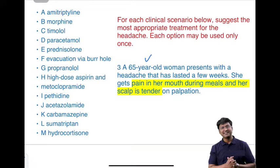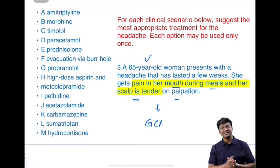The eighth scenario: a 65-year-old woman presents with headache lasting a few weeks, pain in her mouth during meals, and scalp tenderness on palpation. This is suggestive of giant cell arteritis (temporal arteritis), seen in elderly females over 50 years. Jaw claudication and scalp tenderness are the hallmarks. The drug of choice is prednisolone.